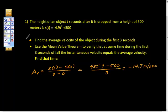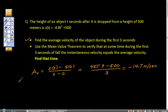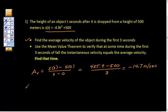So that's the first problem solved. The second problem asks us to use the mean value theorem to verify that at some time during the first 3 seconds of the fall, the instantaneous velocity equals the average velocity. So I'm going to take the first derivative of this, and velocity, we know that velocity equals the first derivative of position.